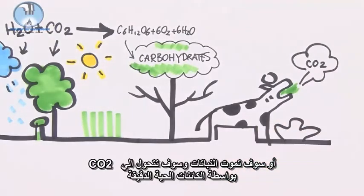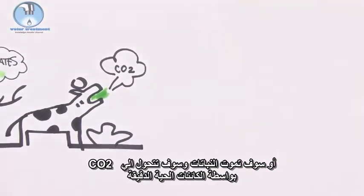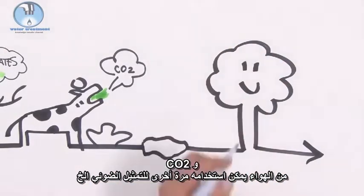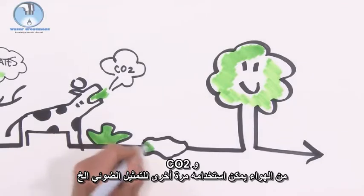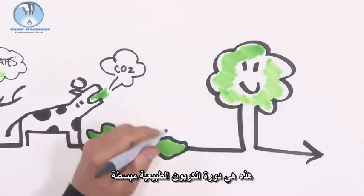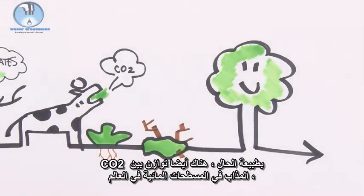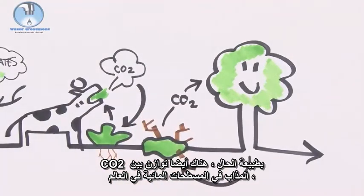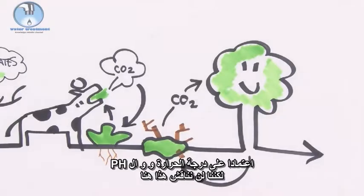Or plants will die and are respired into CO2 by microorganisms. The CO2 from the air can be used again for photosynthesis. This is the simplified natural carbon cycle. Of course there is also a balance between CO2 dissolved in the water bodies of the world depending on temperature and pH, but we will not discuss that one here.